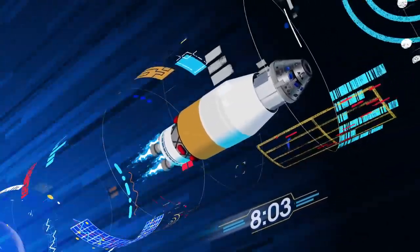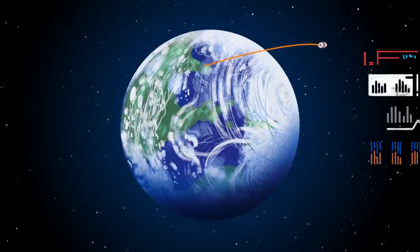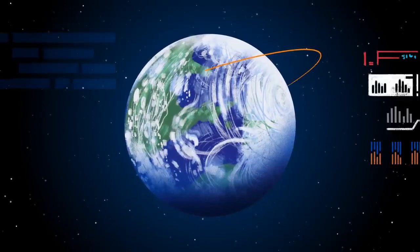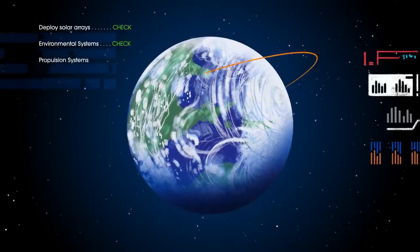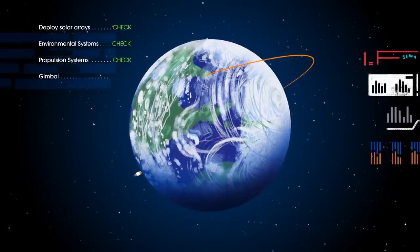The upper stage fires briefly, placing Orion into a parking orbit around the Earth. Here, the crew reconfigure the spacecraft and check systems to confirm everything is ready for deep space travel.